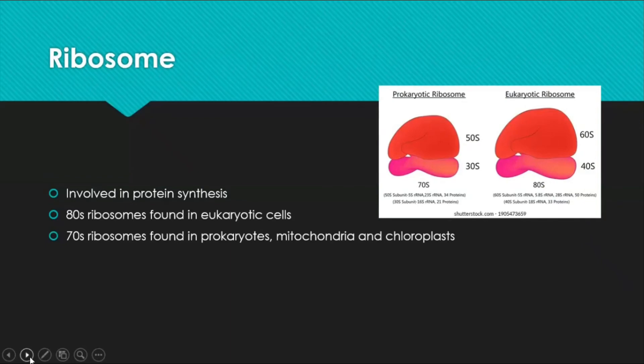Ribosomes are the protein factory of the cell — they produce proteins. Ribosomes are of two types: 80S and 70S. 80S ribosomes are found in eukaryotic cells, and 70S ribosomes are found in prokaryotic cells, as well as in mitochondria and chloroplasts.